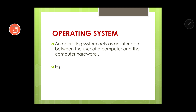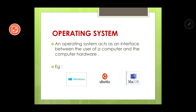I will give you some examples of operating systems. The most popular one is the Windows operating system, developed by Microsoft. Next is Ubuntu, which is a Linux distribution operating system. You just need to remember it as an example for now — we can discuss Linux in your higher classes. We also have Mac OS, which is developed by Apple.